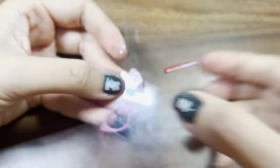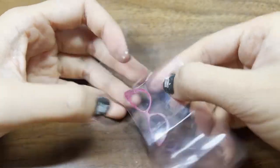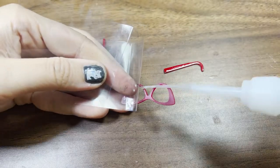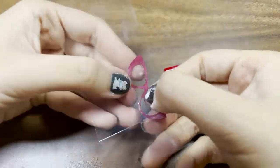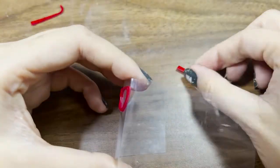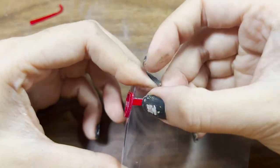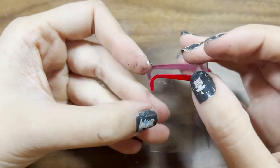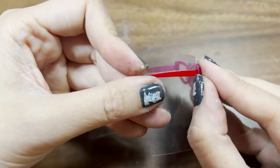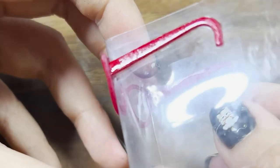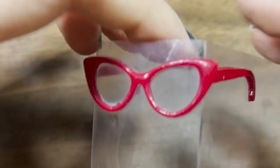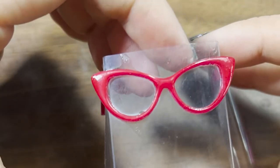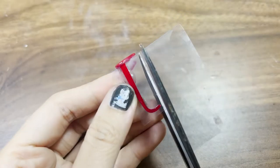Now, superglue the glasses and handles to the base. Remember to leave some space for gluing the handle later. And cut off the remaining part.